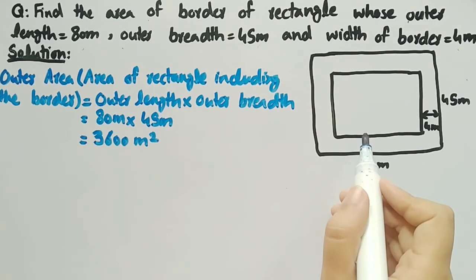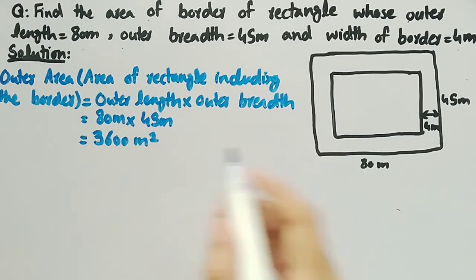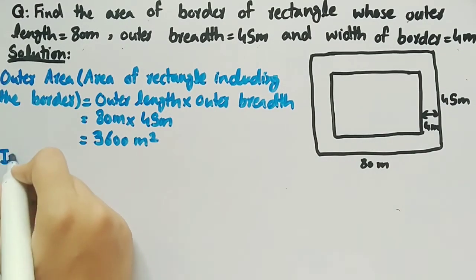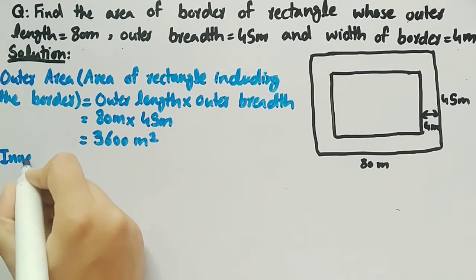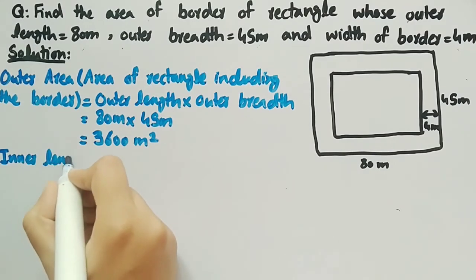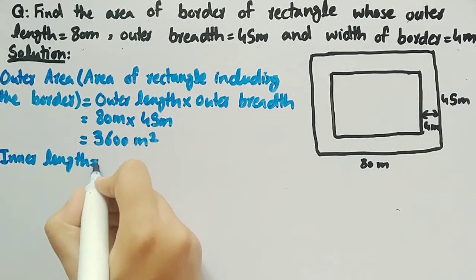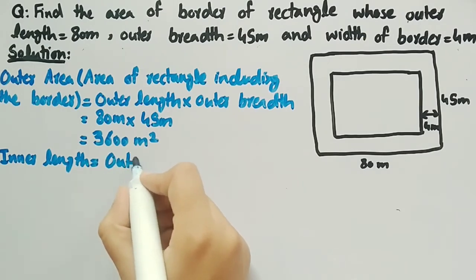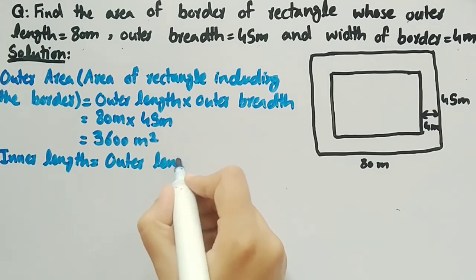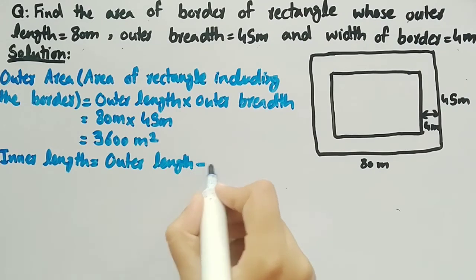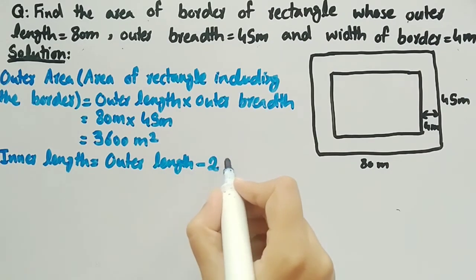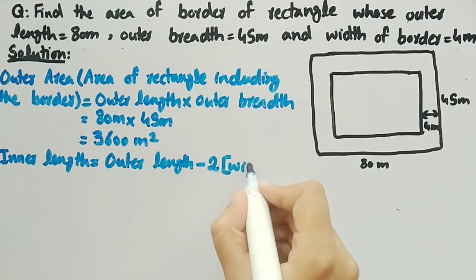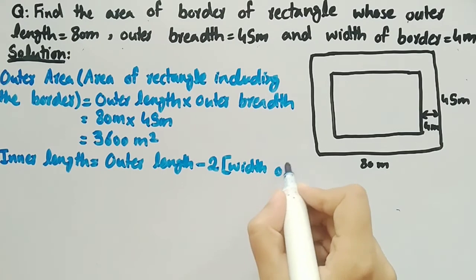To find the inner area, we need the inner length and inner breadth of the rectangle, which are not given. So firstly we will find the inner length. Inner length is equal to outer length minus two times the width of border.